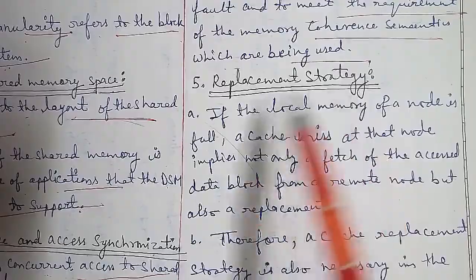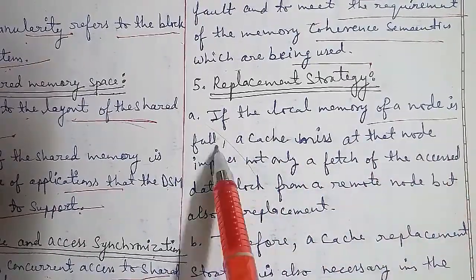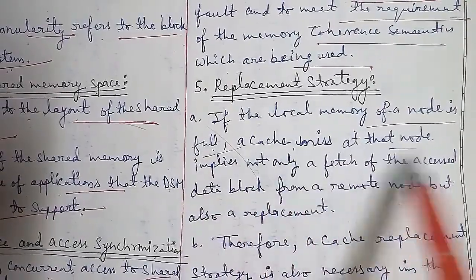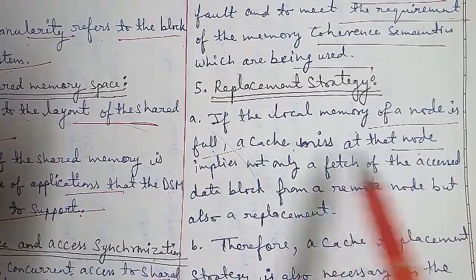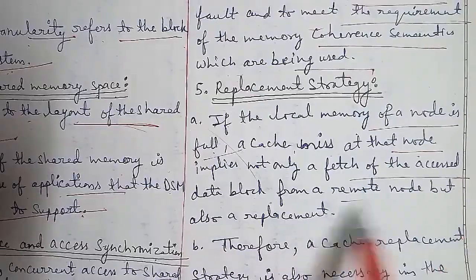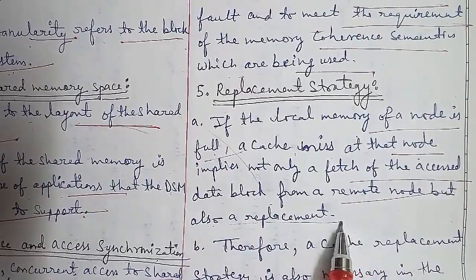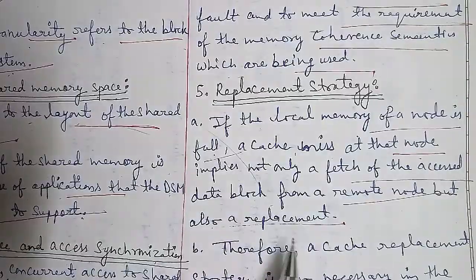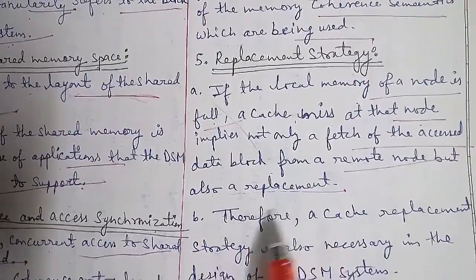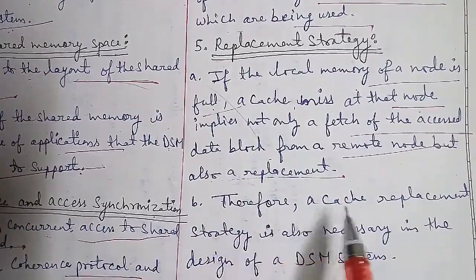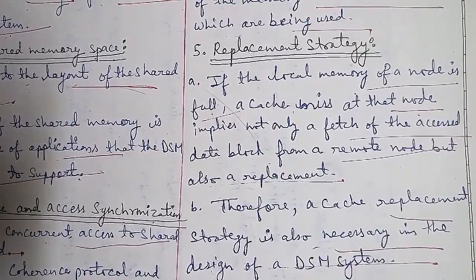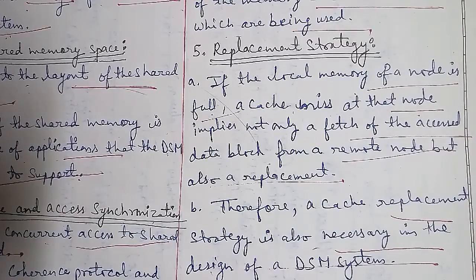In DSM, like local memory, if a node is full, a cache miss occurs. A cache miss implies not only a fetch of the data block from the remote node, but also a replacement. Therefore, a cache replacement strategy is also necessary in the design of a distributed shared memory system.